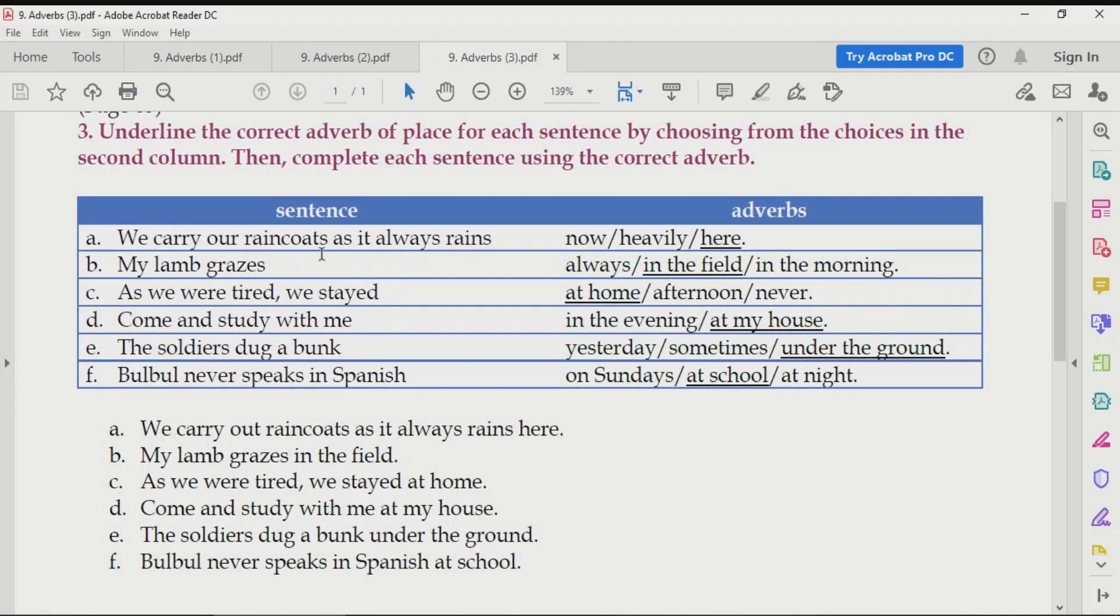We carry our raincoats as it always rains. This sentence is easy to understand. Now, let's move on to the options. We have to select a correct adverb of place. Now, if you say now, it is time, abhi. Heavily means manner, kis tarikayse. Here means place, yaha. So, this is a correct answer.